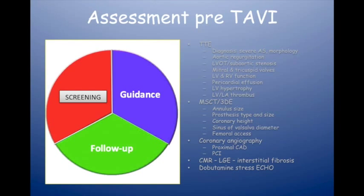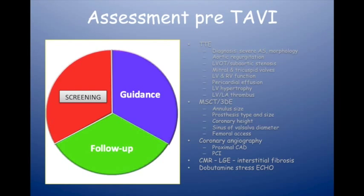Finally, we look at femoral access. Probably 85% of TAVI procedures are performed via the femoral artery. TAVI is a percutaneous, minimally invasive aortic valve replacement. All patients have coronary angiography before we proceed. If there's proximal coronary artery disease, we treat it usually with angioplasty. If there's mid-to-distal disease, we leave it alone.